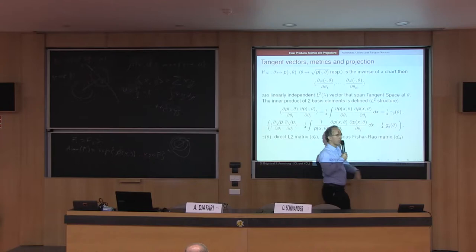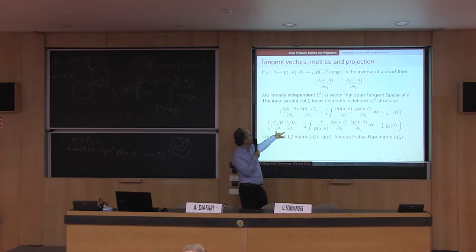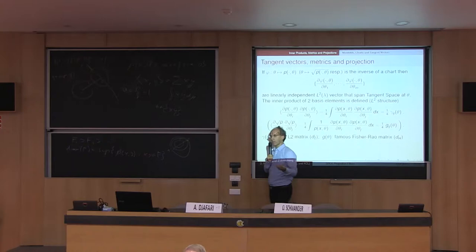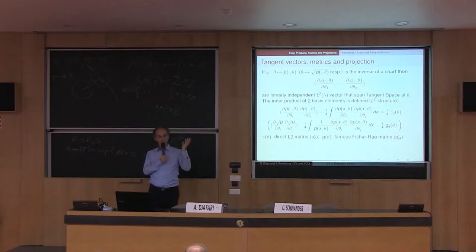If you choose the square roots and compute the L2 inner product of these two vectors, you get the familiar Fisher information metric. The Fisher information metric is induced by the Hellinger distance from the L2 structure on the square roots of densities on the finite dimensional manifold.